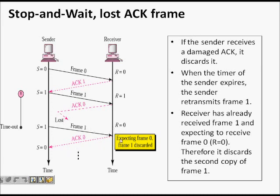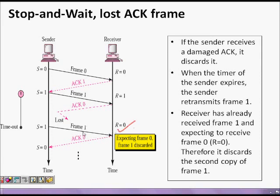Even though the receiver discards the duplicate frame 1, it must still send ACK 0. Why? Because if it does not, the sender's timer will expire again and frame 1 will keep repeating. So even when discarding a duplicate, the receiver must send ACK 0 to tell the sender: I already received frame 1, please send frame 0 next.